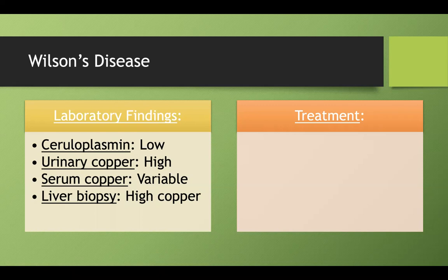On a test, they're usually looking for you to pick ceruloplasmin levels first. You wouldn't want to go straight to a biopsy if you're concerned someone might have Wilson's disease. They want you to check serum ceruloplasmin first, and then if ceruloplasmin comes back low and urinary copper is high, you could potentially consider a liver biopsy if necessary.